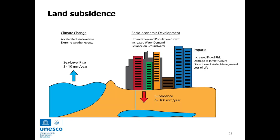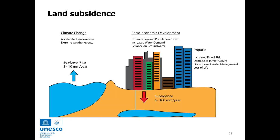Land subsidence can also drive coastal erosion. Land subsidence can be caused by tectonics or due to groundwater extraction and the compaction of rocks above the groundwater. Land subsidence can expose coastlines to waves, tides, and storm surges — and thus effectively acts as sea level rise — causing erosion in the upper parts of the beach.